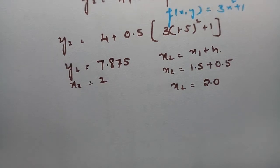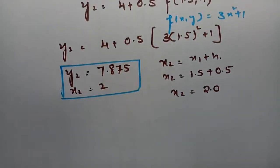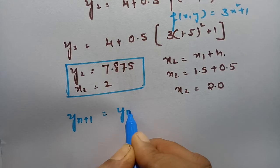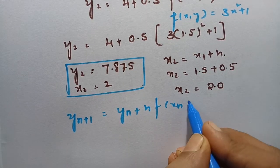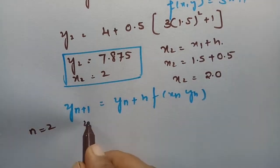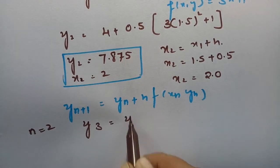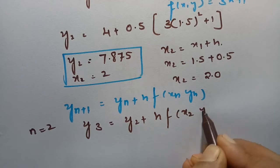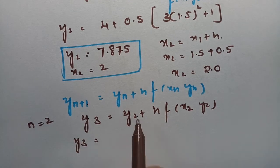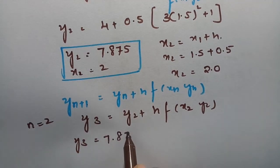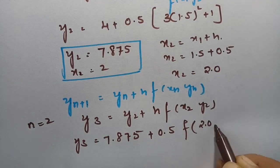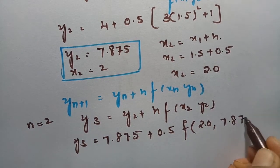Next, we go with y₃. According to Euler's method, y(n+1) = yn + h·f(xn, yn). Keeping n = 2, this gives y₃ = y₂ + h·f(x₂, y₂). Every value is ready. y₂ = 7.875, h = 0.5, and x₂ = 2.0.